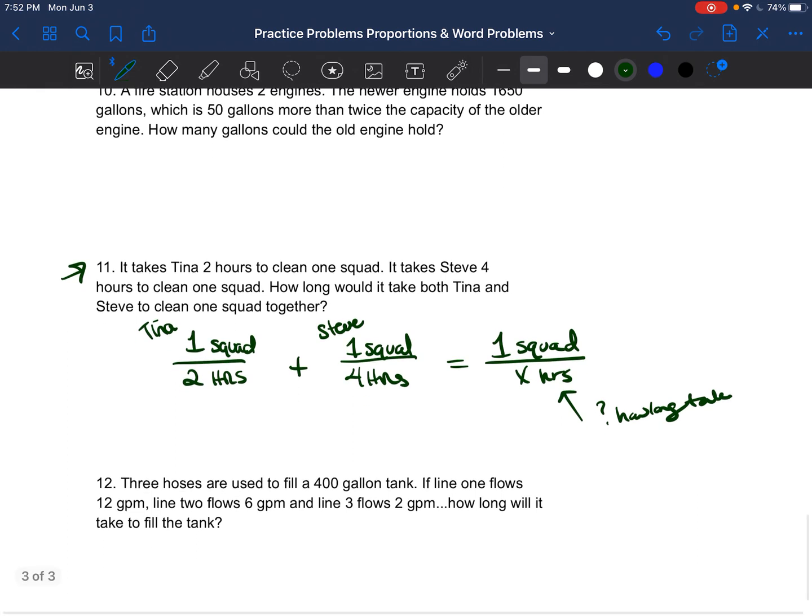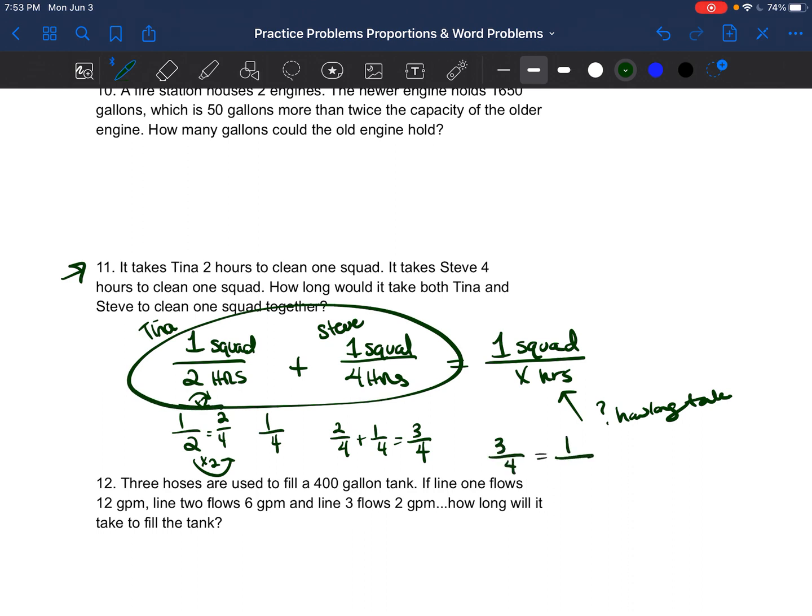So now we're going to add one half plus one fourth to see what that's equal to. We can multiply this to have a denominator of four by multiplying the bottom by two and the top by two. So it's two fourths. So two fourths plus one fourth is equal to three fourths. So now instead of this, we can write three fourths is equal to one over X.